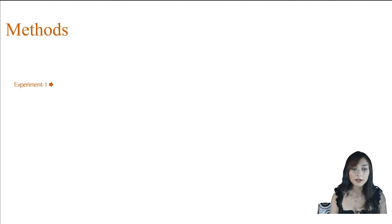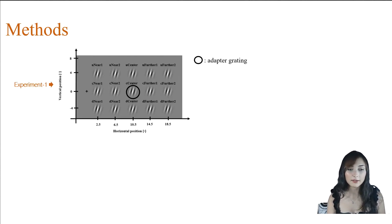In experiment 1, we measured the spread of the tilt-after effect at 15 test locations shown in this graph. The x-axis shows the horizontal position and y-axis shows the vertical position of the test gratings. The cross sign here indicates the central fixation point that participants were instructed to fixate during the experiment. They performed the experiment at either right visual hemifield or left visual hemifield, and we counterbalanced this across participants. Finally, the solid circle here shows the location of the adapter grating which stayed same during the experiment.